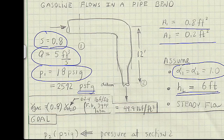Lastly, we'll assume steady flow. The goal is to find the pressure at 2, and we want to find this in units of psi g.